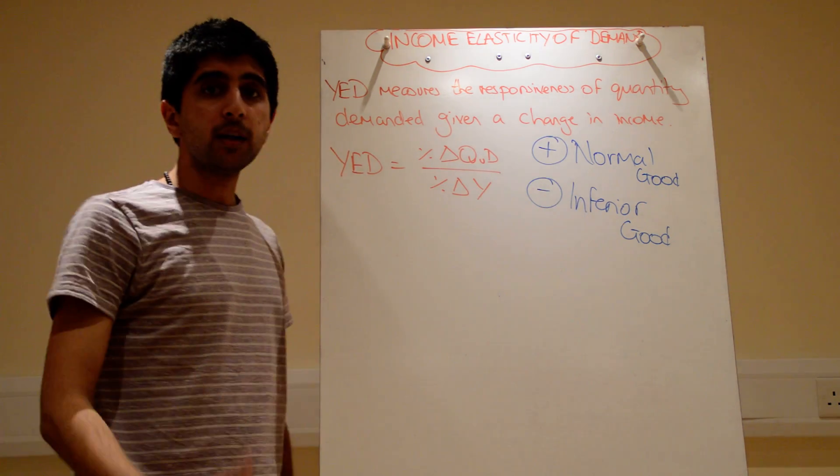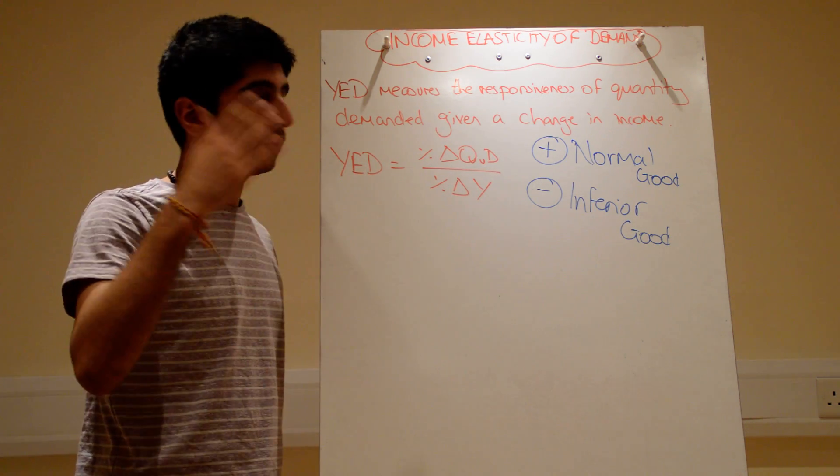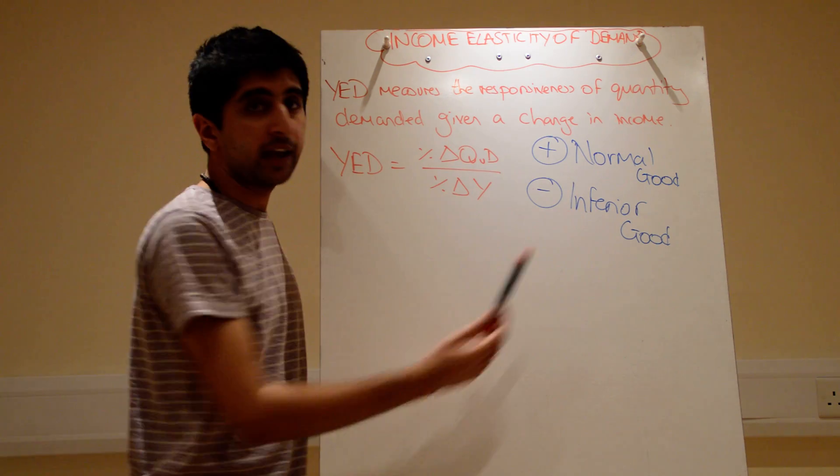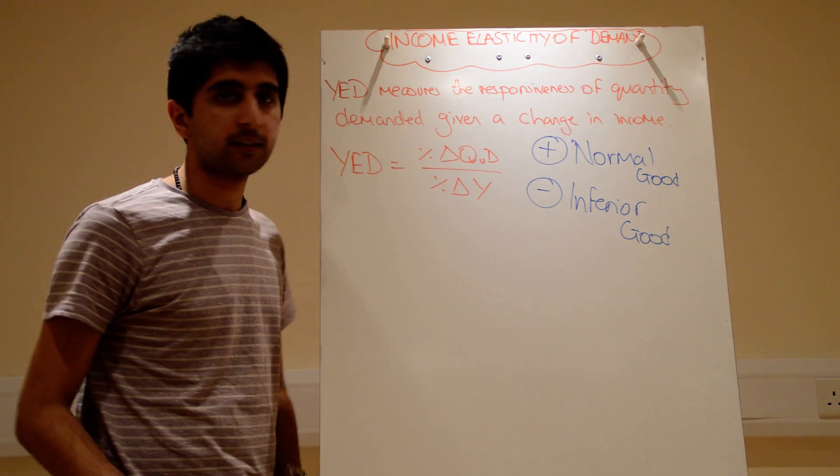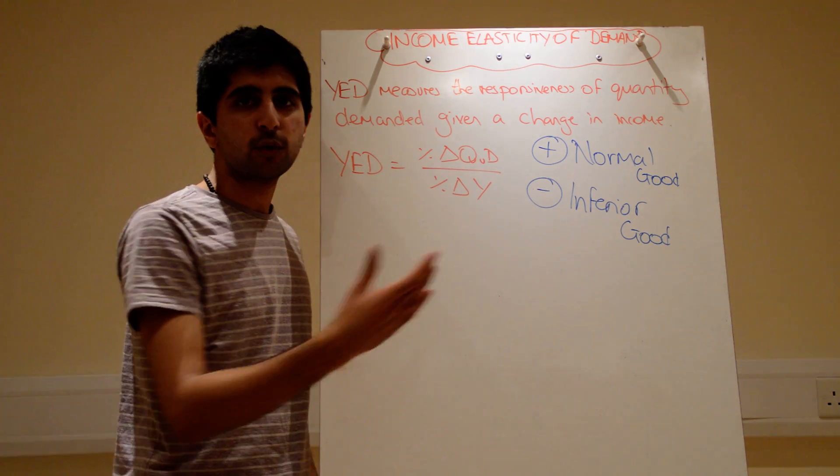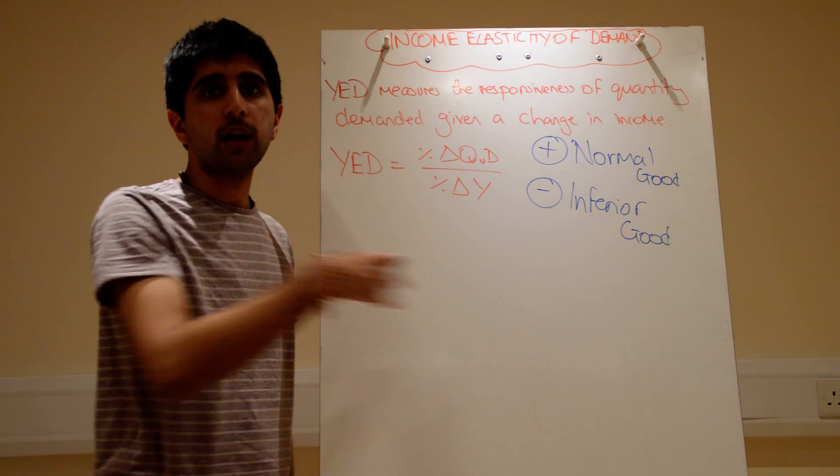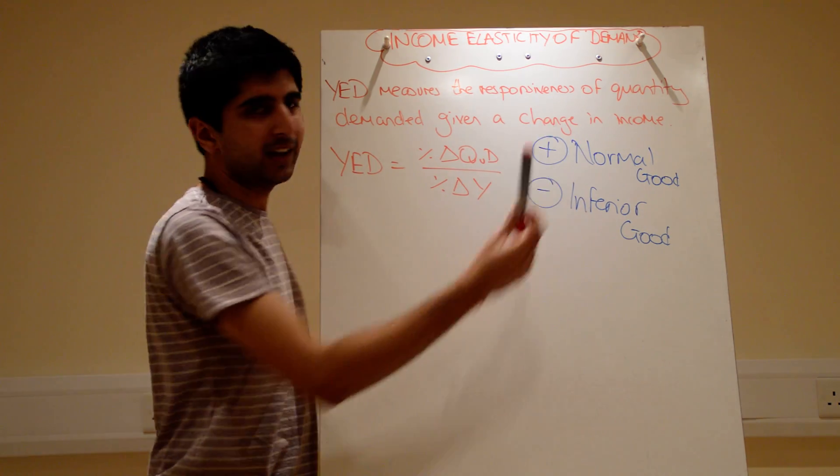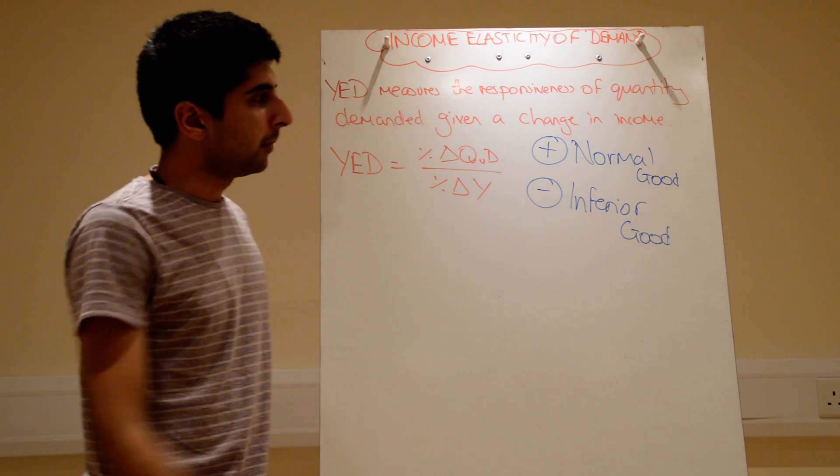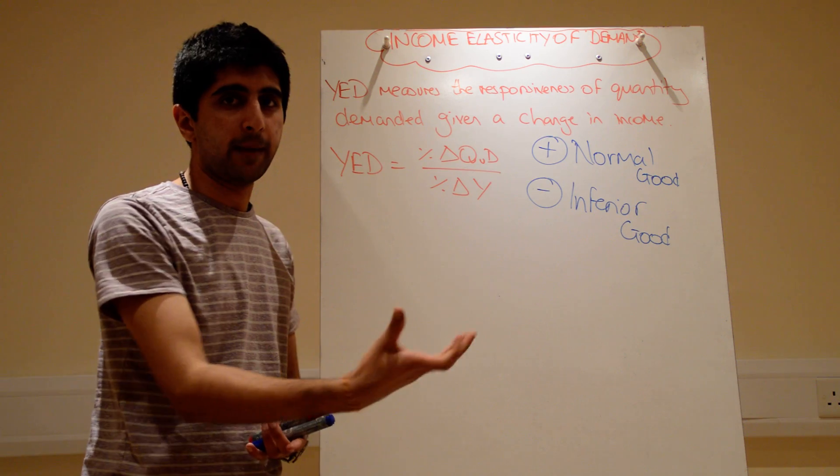Whereas inferior goods, when incomes go up, demand shifts to the left. When incomes go down, demand shifts to the right. So inferior goods, you could say own branded products in supermarkets, like buying Sainsbury's Corn Flakes. You could say it's an inferior good. Bus travel, or just public transport in general, inferior goods. Whereas normal goods, you could say cars, maybe designer clothing. Things when you get richer, you want more of them.